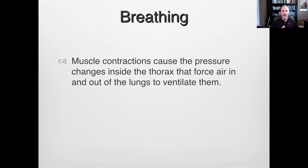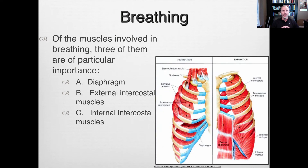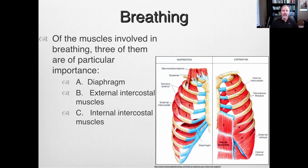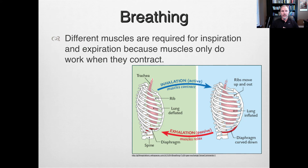With the act of breathing, muscle contractions cause pressure changes inside the chest cavity or thorax, forcing air in and out of the lungs. The main muscles involved are the diaphragm, the external intercostal muscles, and the internal intercostal muscles. The term 'intercostal' refers to the ribs — external are on the outside, internal on the inside, and the diaphragm is at the base of the ribs. These muscles are required for inspiration and expiration.